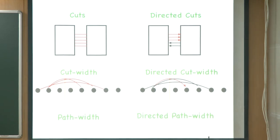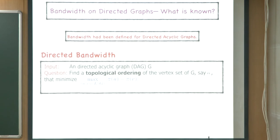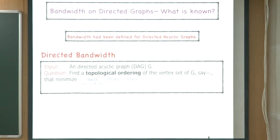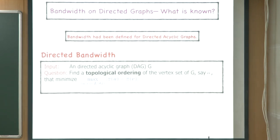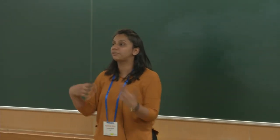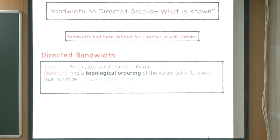This justifies our generalization. Also, why 'digraph bandwidth' rather than 'directed bandwidth'? Because directed bandwidth was previously studied only on DAGs, where the definition existed exclusively for acyclic graphs — finding a topological ordering minimizing the stretch of all arcs. That is not what we study here.